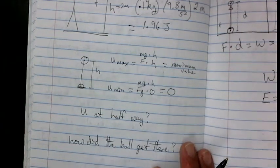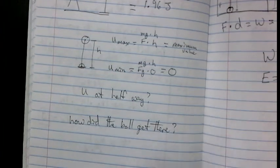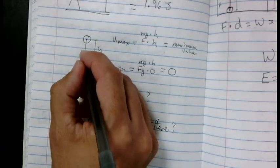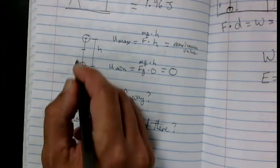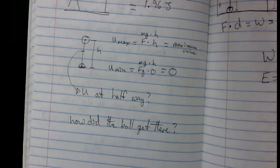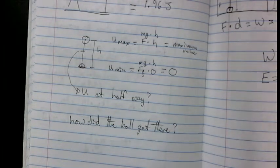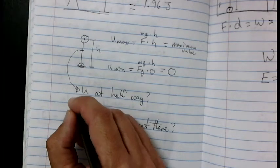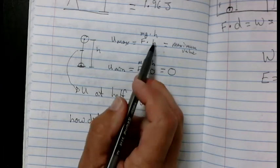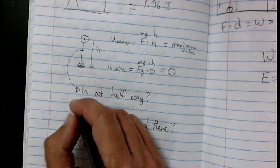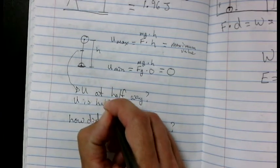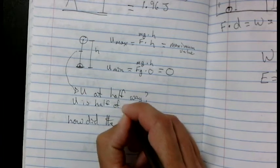So here's a question. What is the potential energy going to be if the object falls halfway? So what is U at halfway? Halfway, the height is going to be cut in half. We could do the math, and what you would find out is U is half of its maximum.